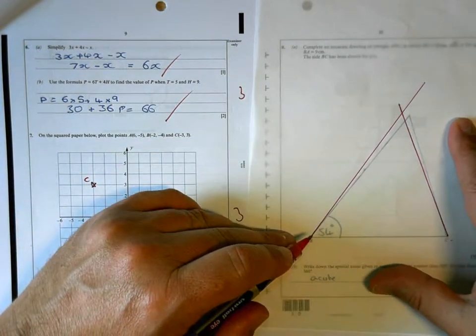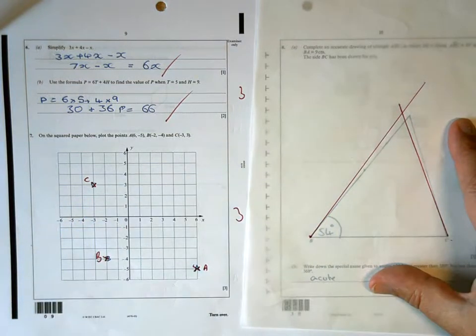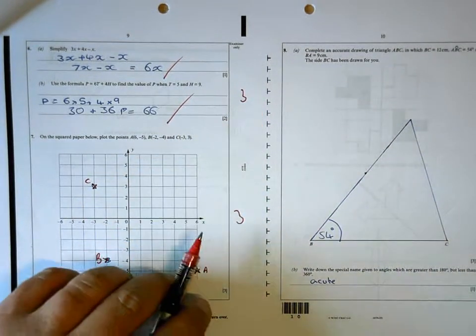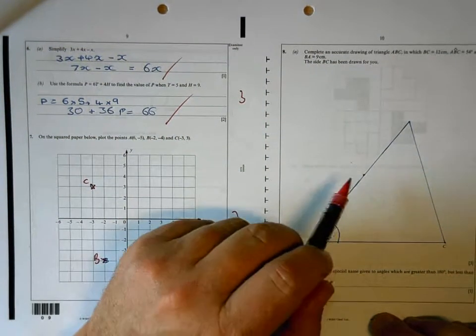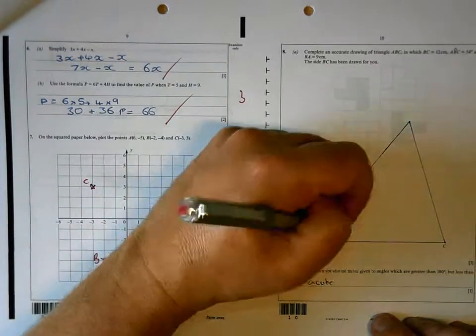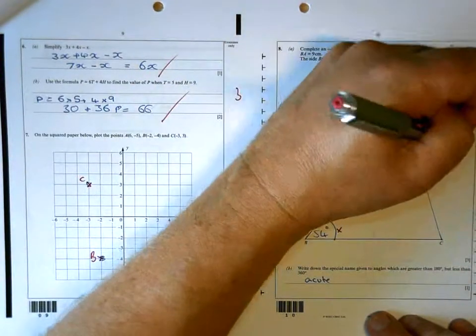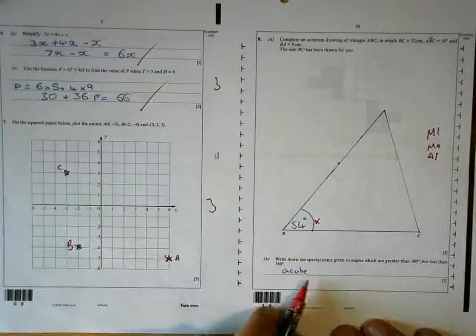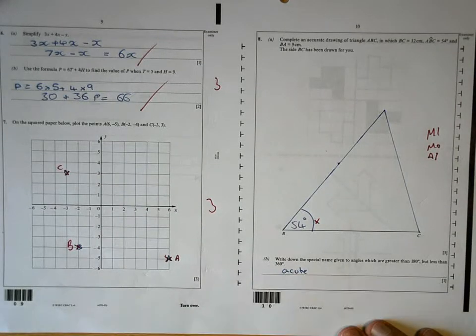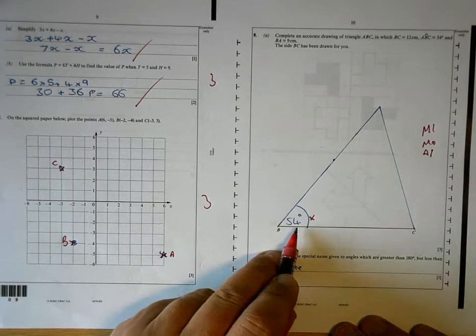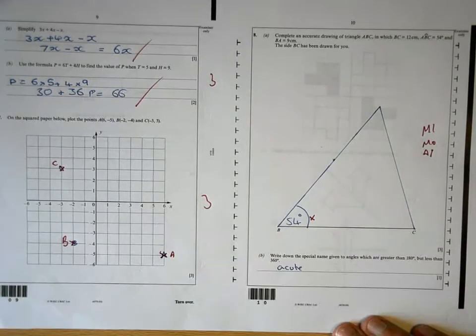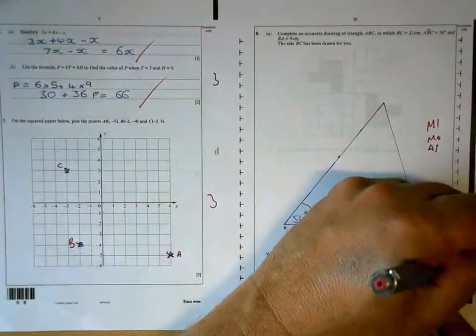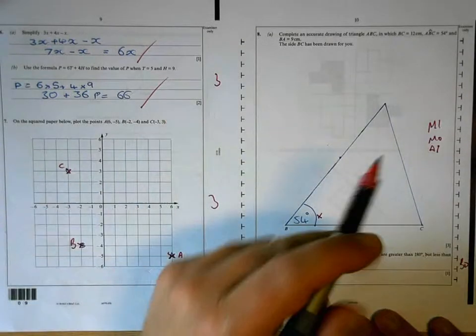Your angle is a little bit less than 54 degrees, but the length of it is 9 centimeters. So of the three marks, you will lose one mark for your angle, so that's slightly out, but the length is okay. And the special name given to angles which are greater than 180 but less than 360 is not acute. That's an acute angle, less than 90. What you're looking for there is a reflex angle. Total for the page, three, six, eight.